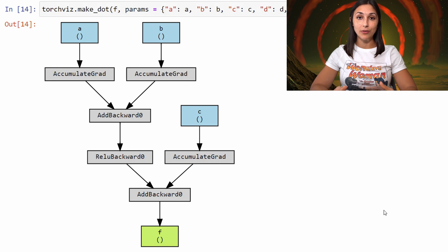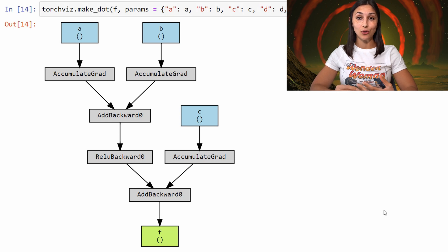Now that we have an understanding of computational graphs and what it means to detach a tensor from a graph, we can understand what we were doing in our earlier project when we were detaching the tensor from its computational graph during DCGAN training in PyTorch. Check out the corresponding blog for this episode to understand why we're doing that detaching during the training process. By now we should have an understanding of what detaching is and what computational graphs are and how they're used in neural network training.